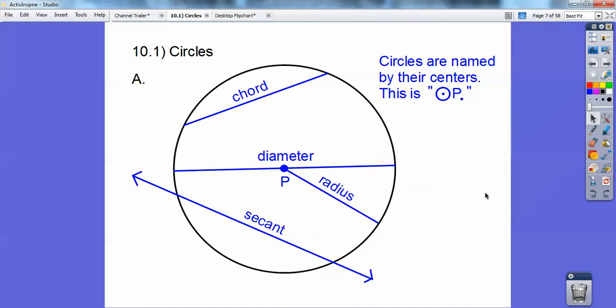So this is a line that goes through the circle in more than one spot. If it only intersects the circle in one spot, it's called a tangent. So there's a tangent line, and that little point right there is called the point of tangency.